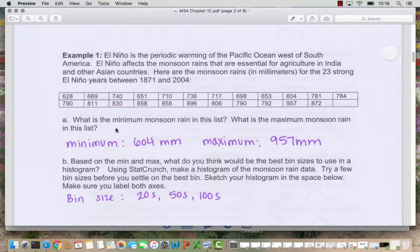So let's start with example one. This is data from monsoons in India. The measurements are in millimeters. These are 23 strong El Nino years from 1871 to 2004. When we look at the data, we see it's not sorted. So we want to first determine what's the minimum monsoon and what's the maximum. The minimum is 604 millimeters and the maximum is 957 millimeters.